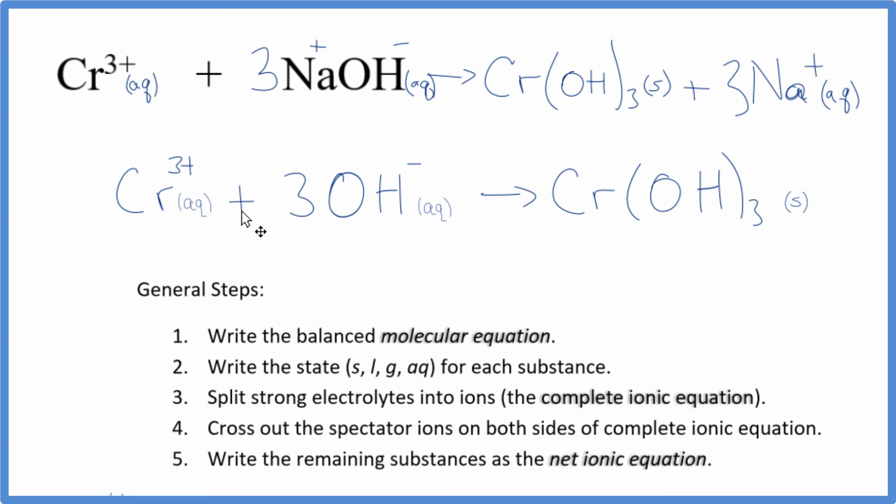If you look at this, all the atoms are balanced. We have three hydroxides here and three hydroxides here. We have a chromium atom and a chromium atom. The charge is also balanced. We have a three plus here, three times one minus, that's three minus. So they add up to zero, net charge of zero. This is a neutral compound, so the net charge is zero here. So it's balanced both for the atoms and the charge.